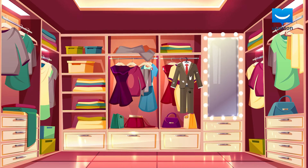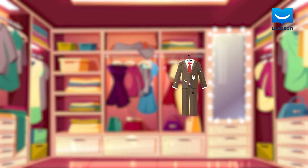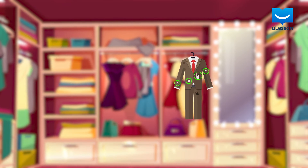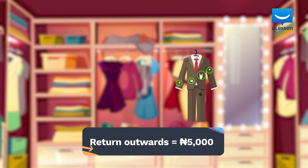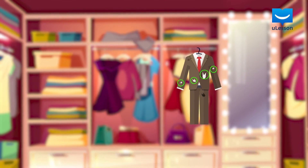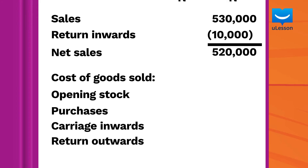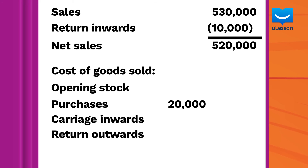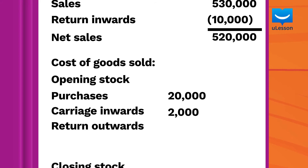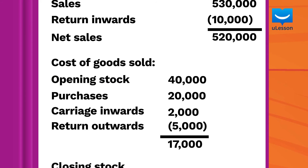However, out of the stock purchased, a few stocks worth 5,000 Naira were torn, and so had to be returned. This is known as returns outwards. This will reduce the value Cairo was expected to pay his suppliers. So the total purchases would be 20,000 Naira plus the carriage inwards of 2,000 Naira minus the returns outwards of 5,000 Naira. This is equal to 17,000 Naira. This would be added to the opening stock of 40,000 Naira to give the sum of 57,000 Naira.